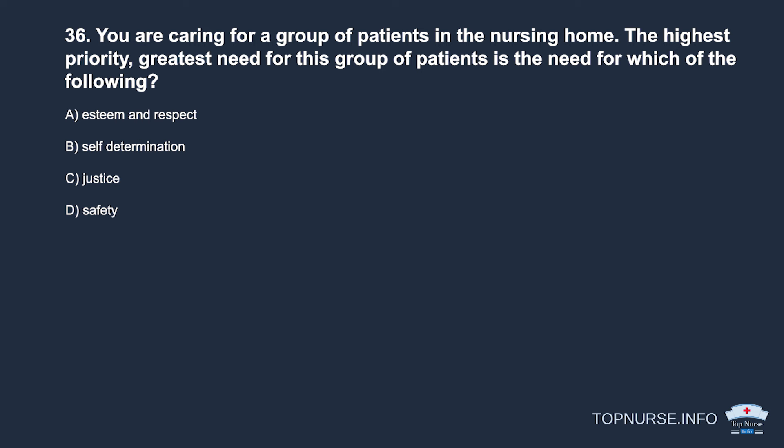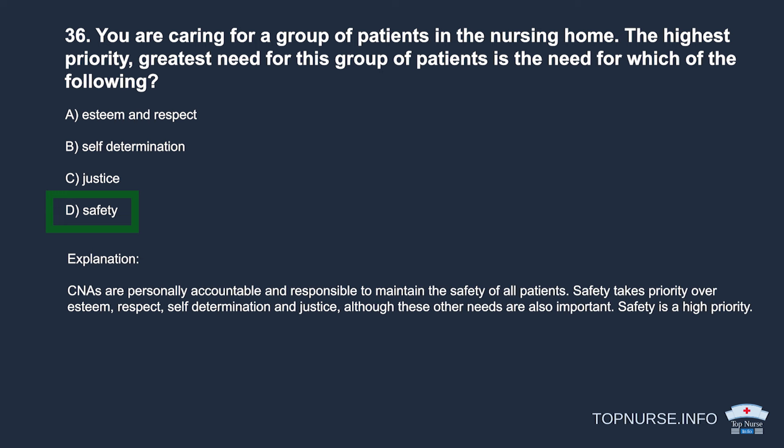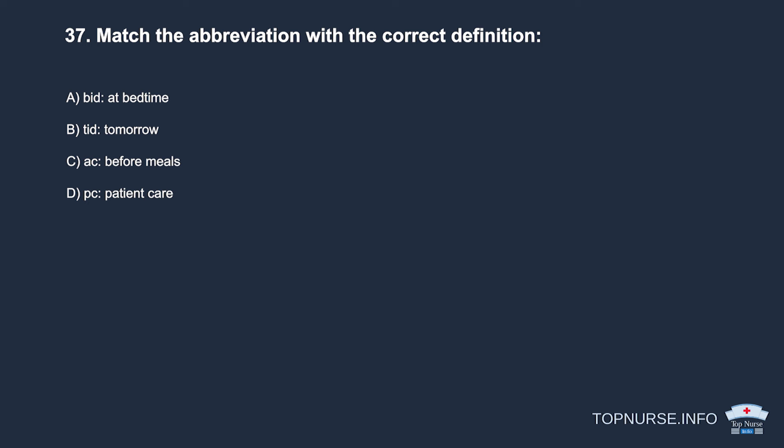Question 36: You are caring for a group of nursing home patients. The highest priority need for this group is: a. Esteem and respect. b. Self-determination. c. Justice. d. Safety. Correct answer: d. Safety. CNAs are personally accountable for maintaining the safety of all patients. Safety takes priority over esteem, respect, self-determination, and justice, although all are important.